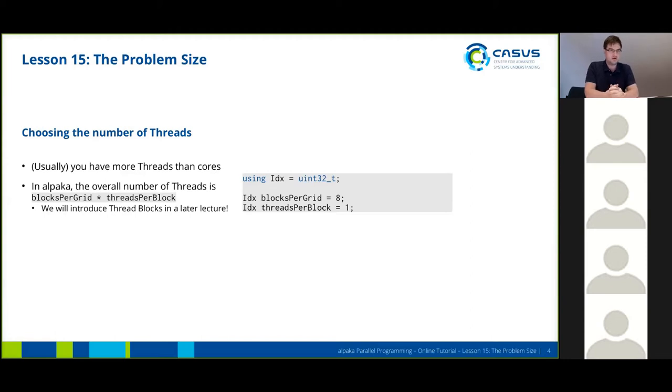Usually you launch more threads than cores because of oversubscription. I've copied the lines here from the right from our hello world example. The number of threads in our system is determined by two values: the blocks per grid and the threads per block. In Alpaca, the overall number of threads is the product of blocks per grid times threads per block. We will cover this in more detail later, but this formula is good to know right now.